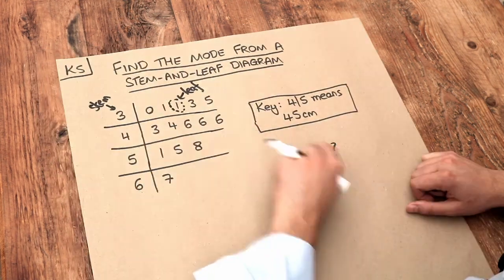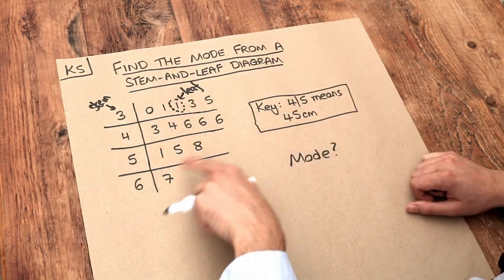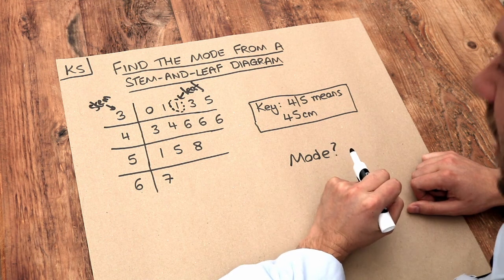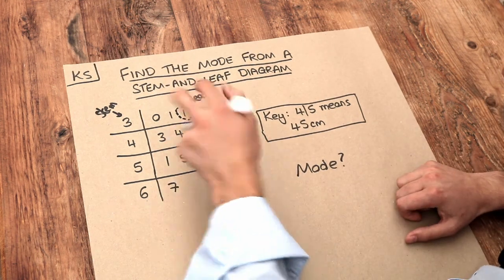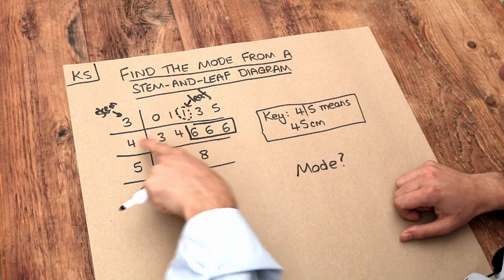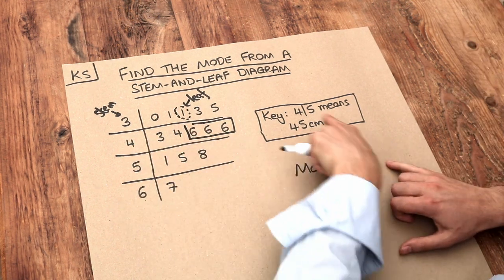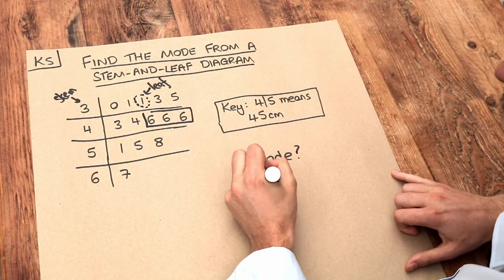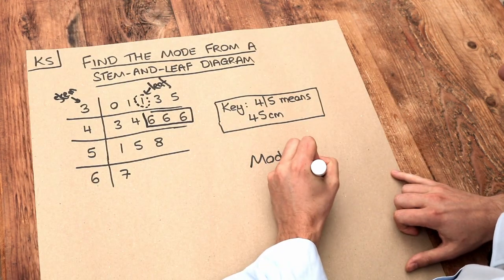Now we want the mode, and because these leaves are in order, it makes it fairly clear when we have repeated values. Can you see we've got this cluster of 6s here? And because each of these numbers here means 46, as per this key, we can see the mode is just going to be 46 centimeters.